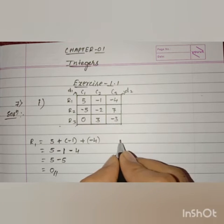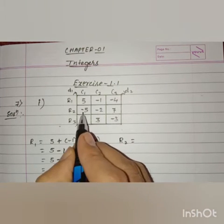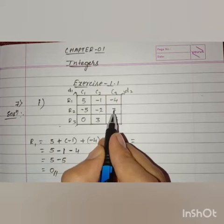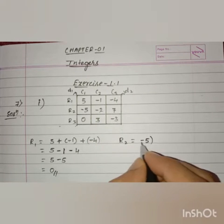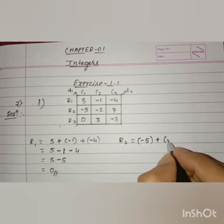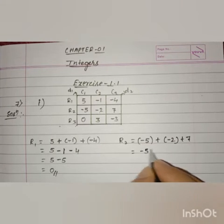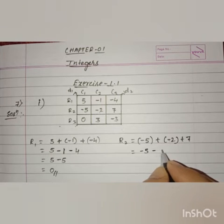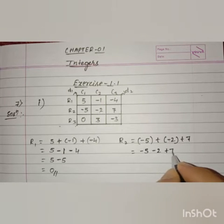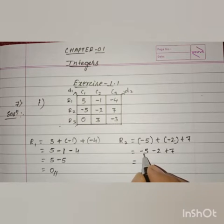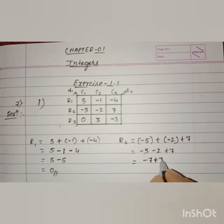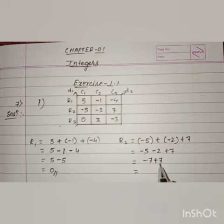Let us find out the sum of row 2. In row 2 we have minus 5, minus 2, and 7. So minus 5 plus minus 2 plus 7. Both negative numbers: minus 5 minus 2 is minus 7. Then minus 7 plus 7 — different sign integers — becomes 0.